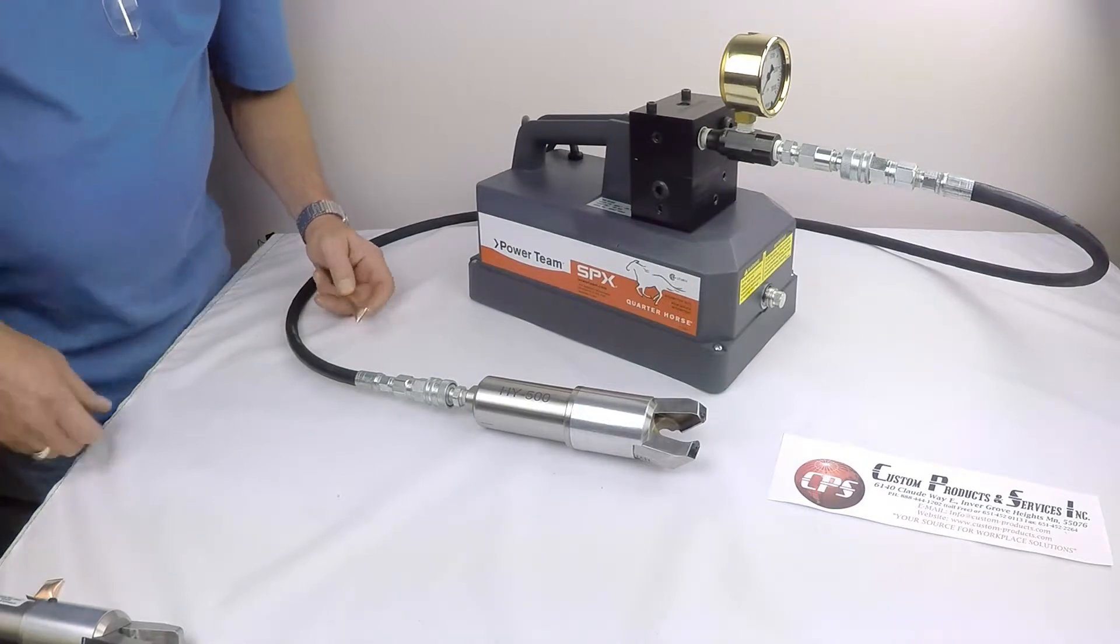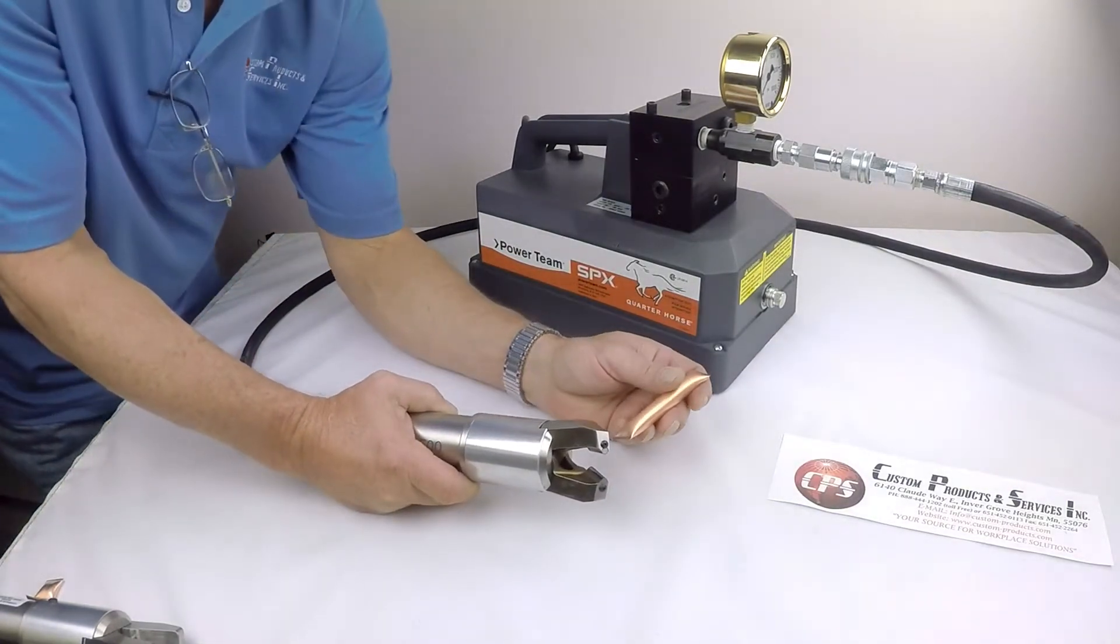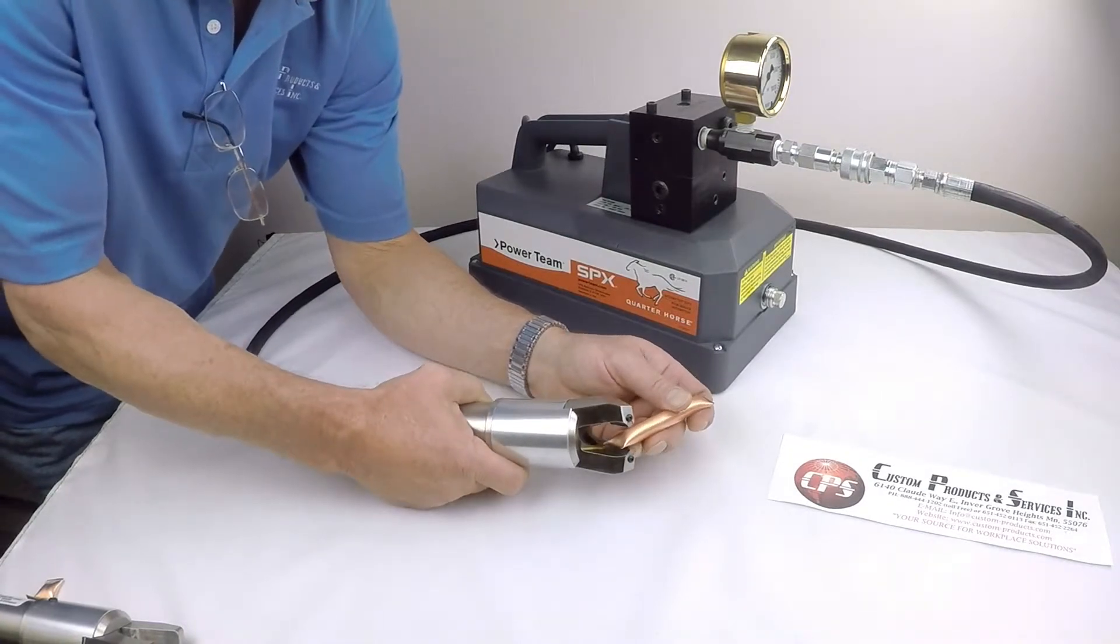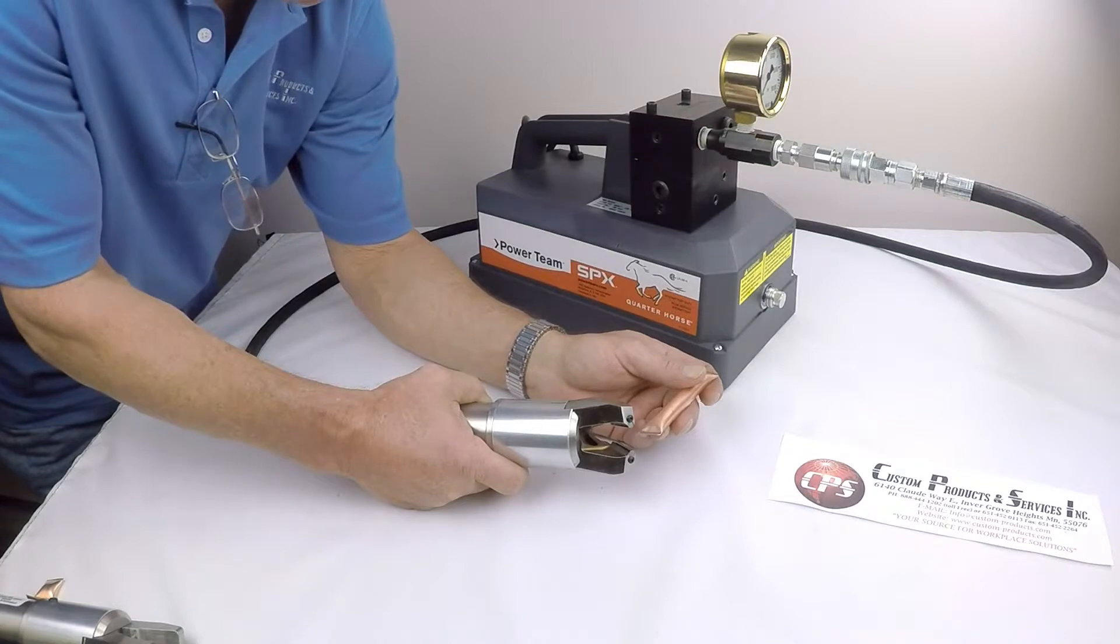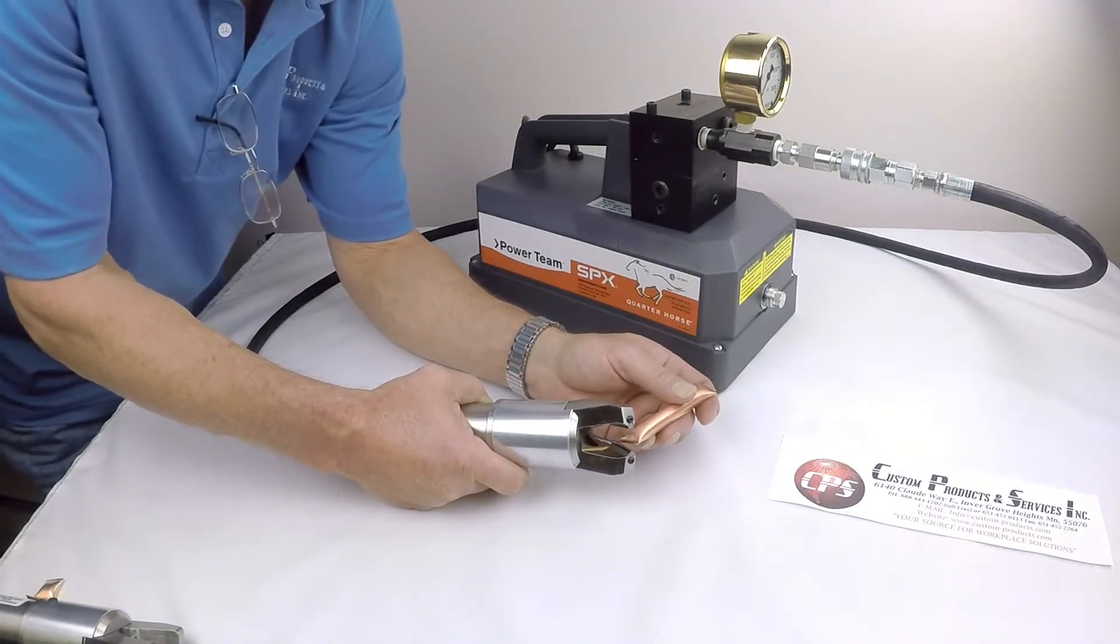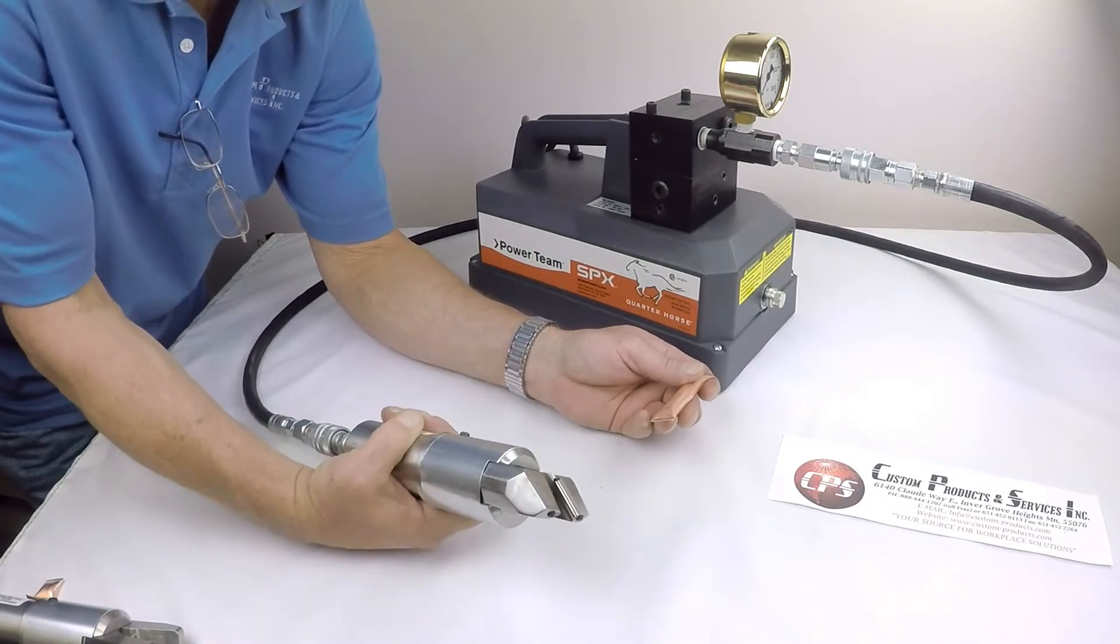This particular tool is set up to work on quarter-inch through half-inch OFAC copper. Works on high purity nickel and aluminum as well. If you have other tube materials that you're using, contact our office and we'll be happy to discuss your application.